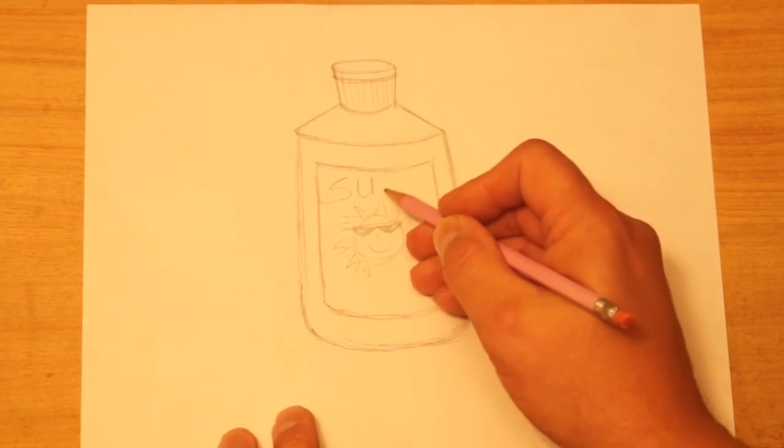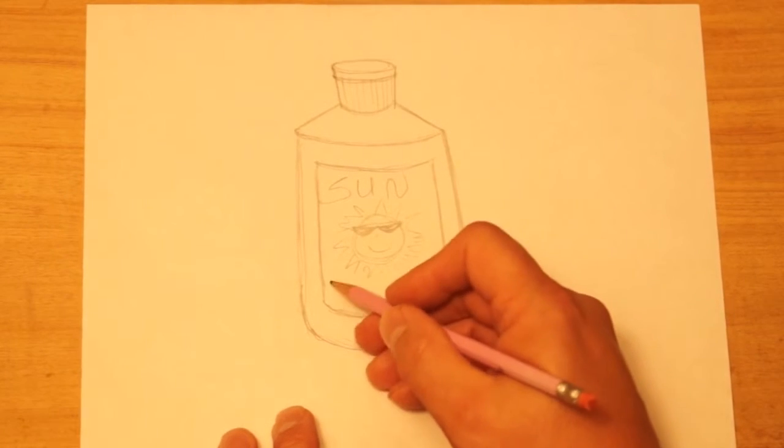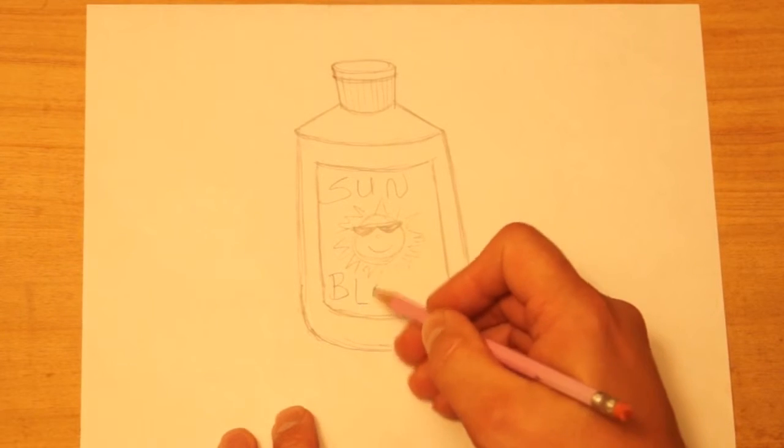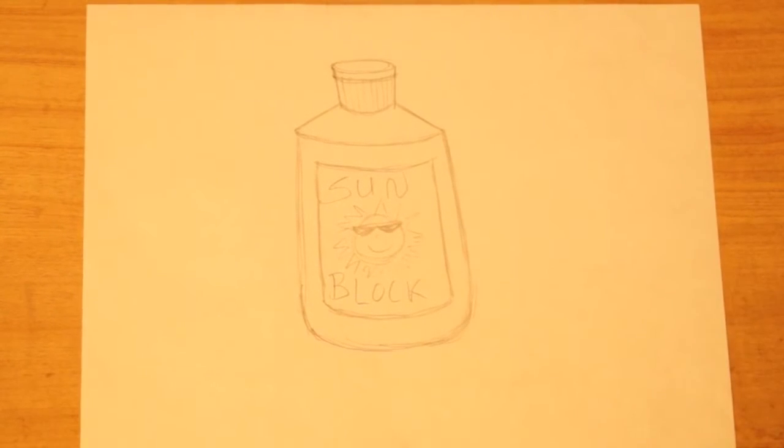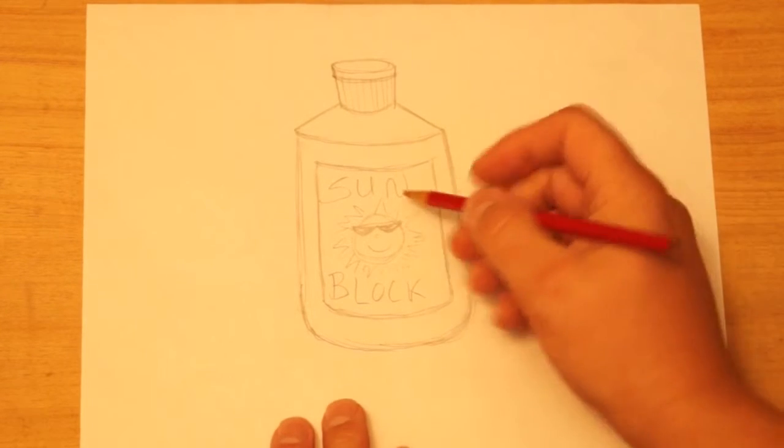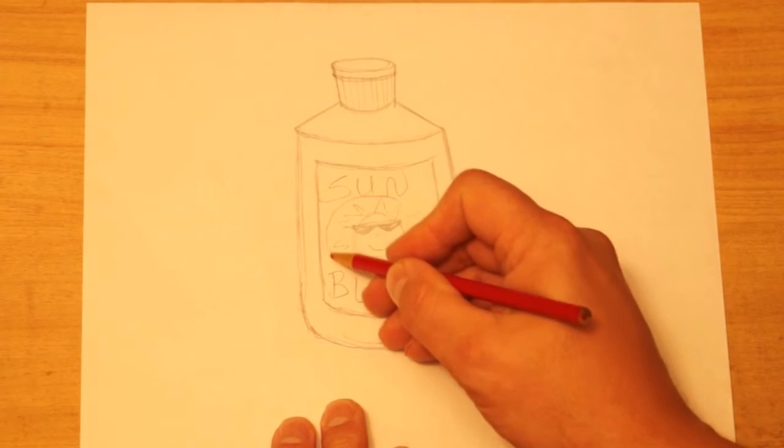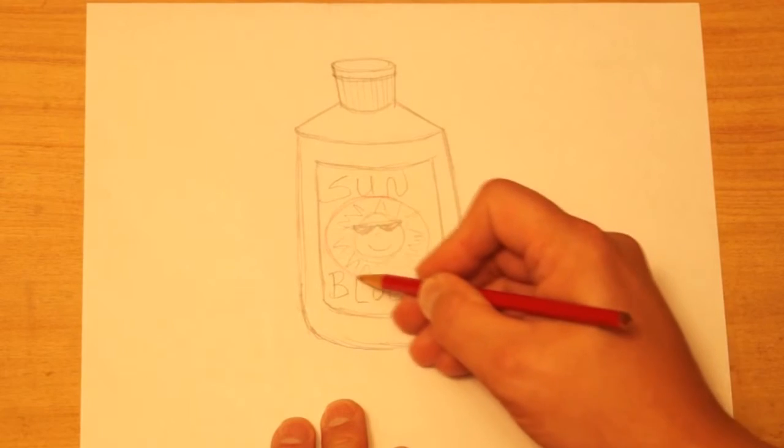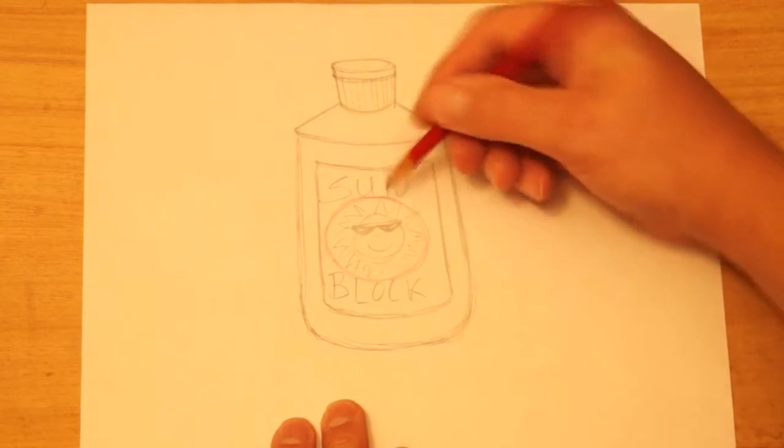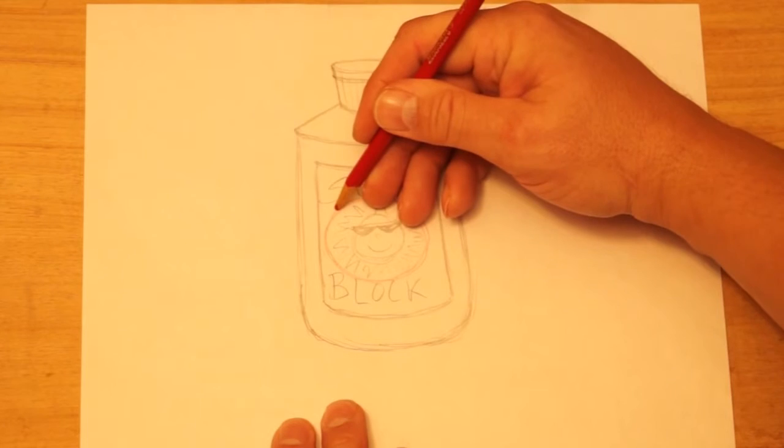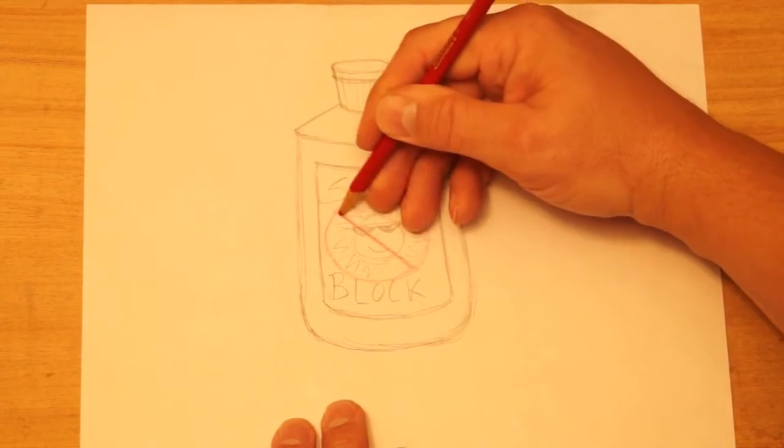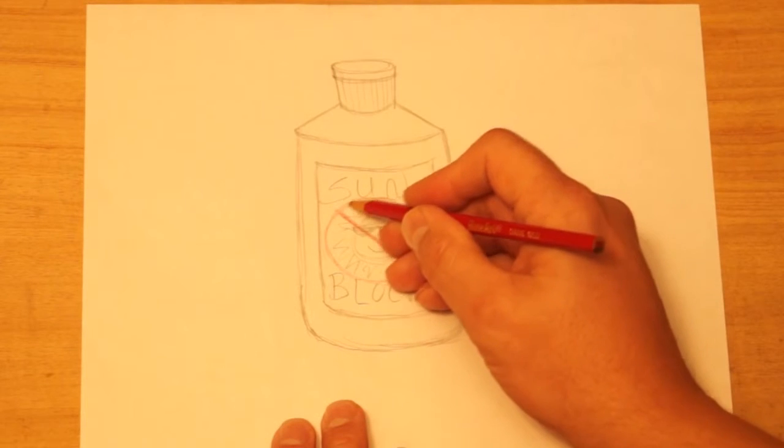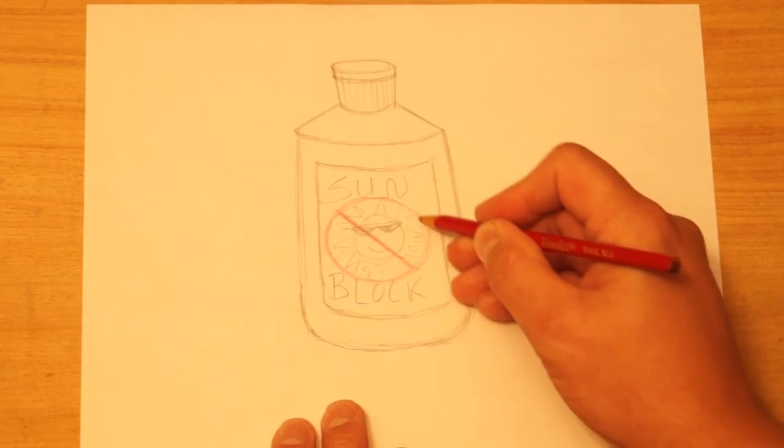I'm going to write the word sunblock. S-U-N and then block at the bottom. And then I'm going to cover that sun with a universal symbol for no, which is a circle, usually in red. And then the ray, you can remember which way the slant goes is that it goes the same way as the letter N would. So it's like an N and an O combined. So that means no sun.